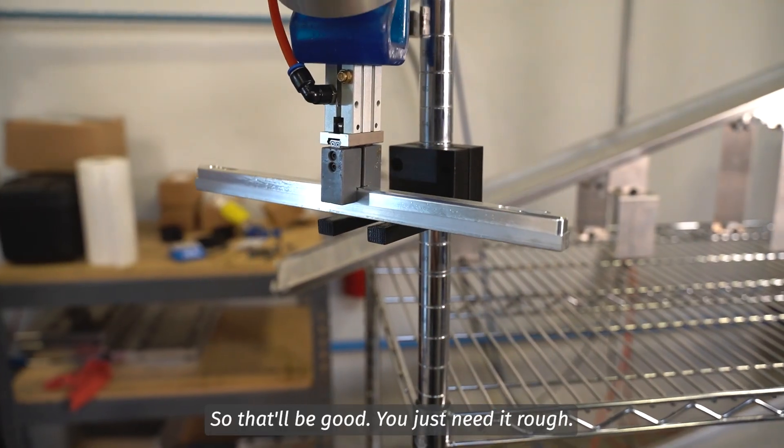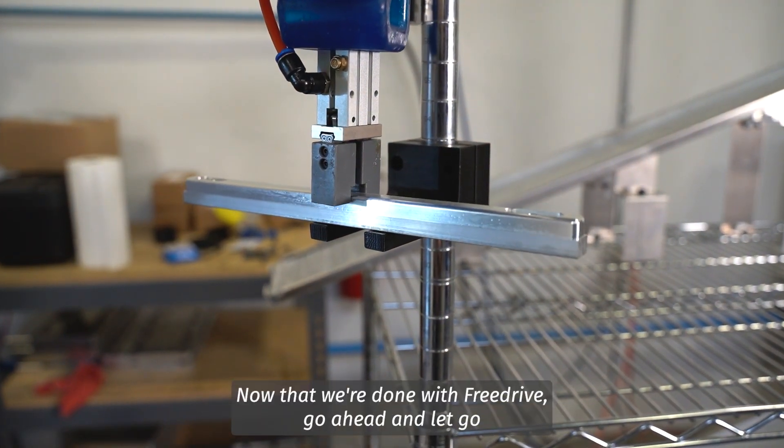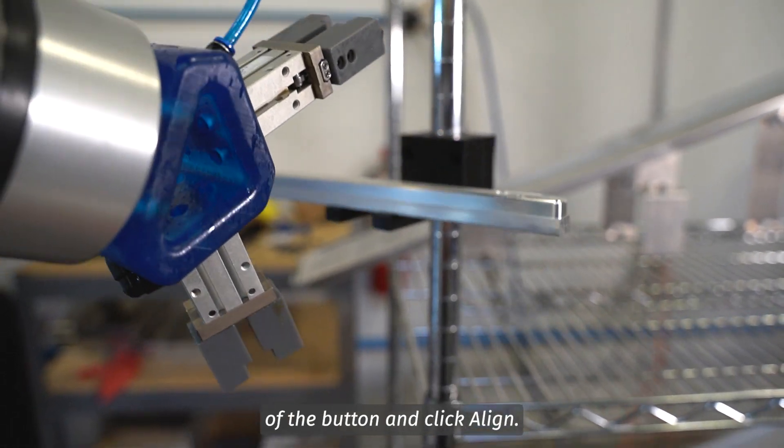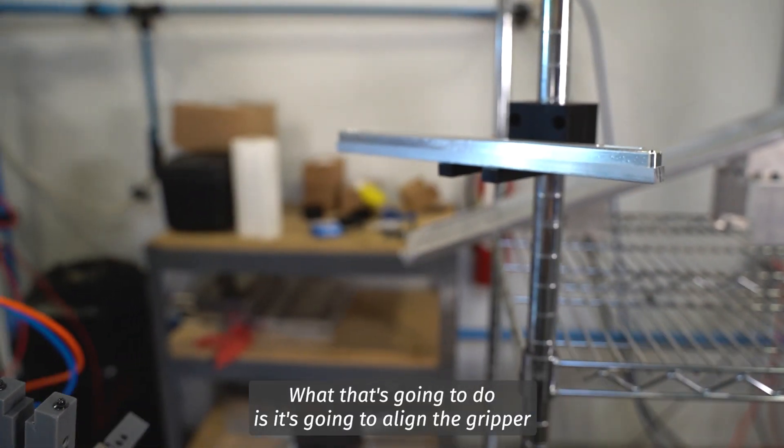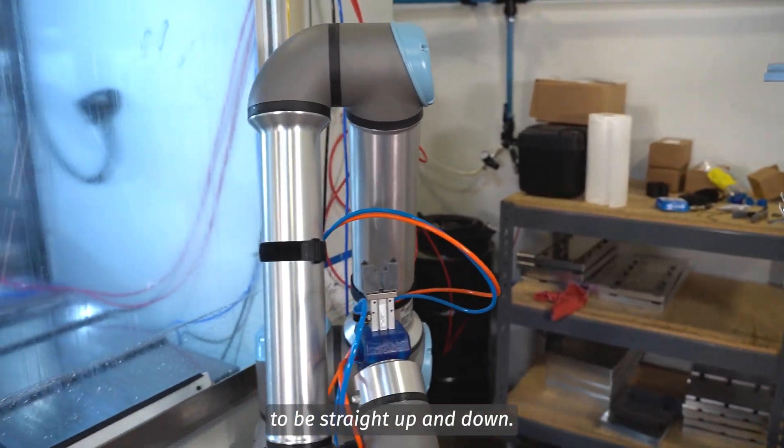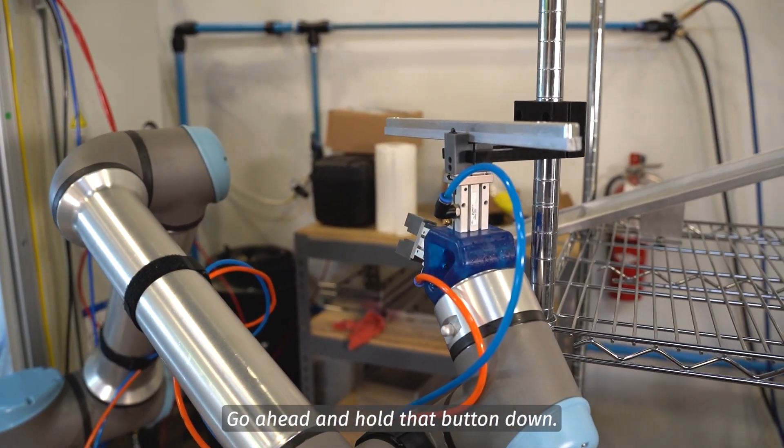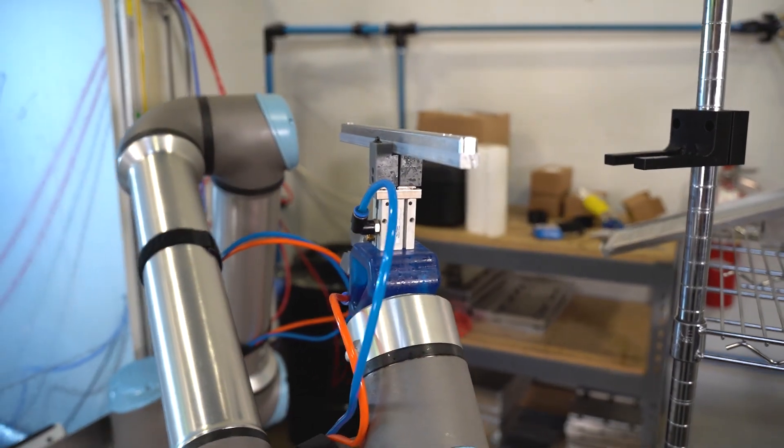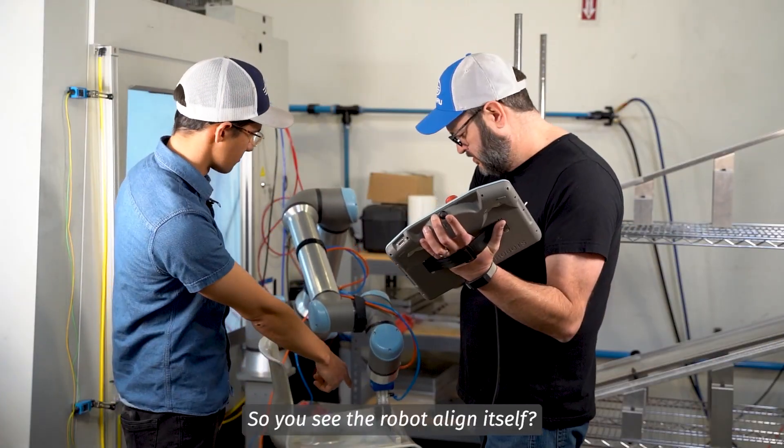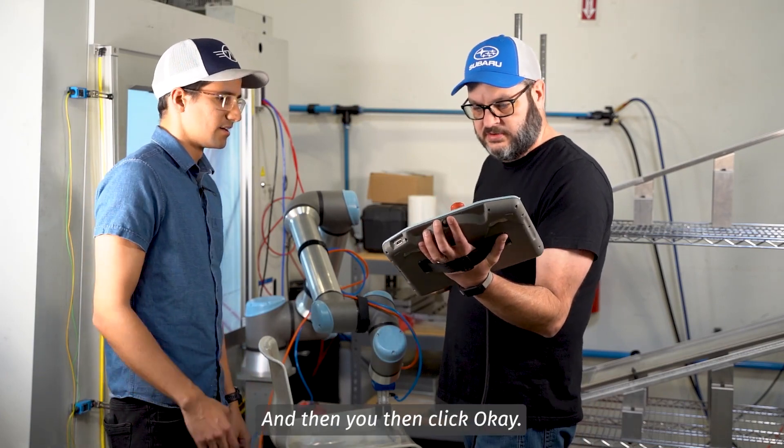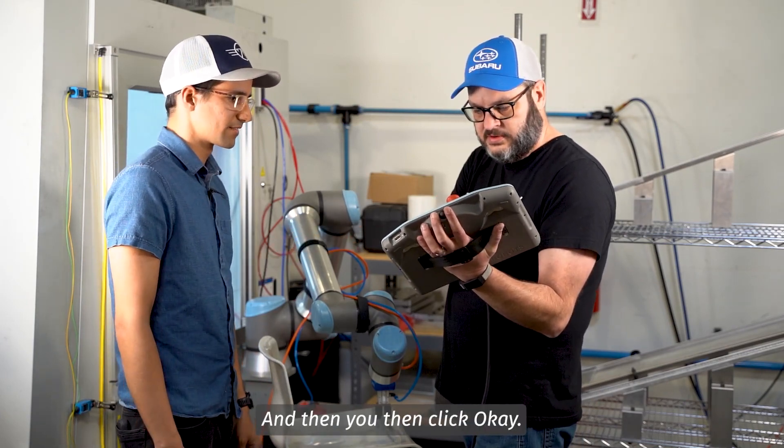Now that we're done with free drive, go ahead and let go of the button and click align. What that's going to do is it's going to align the gripper to be straight up and down, that way you can come straight down to the piece. Go ahead and hold that button down. There you go. So you see the robot align itself? Yeah, perfect. Continue, and then click okay.